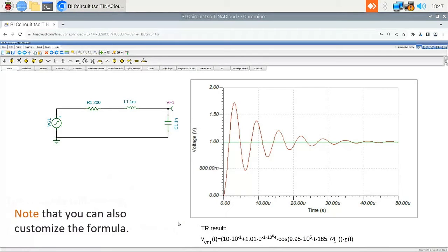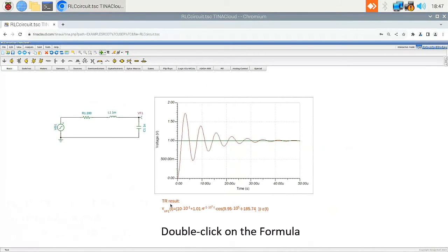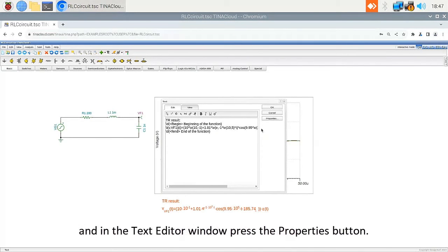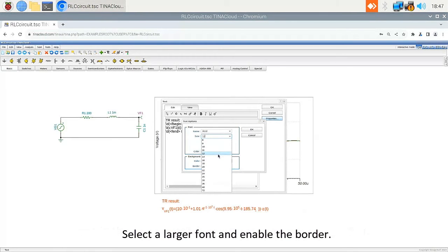Note that you can also customize the formula, for example, you can change the size of the font, or add a border to it. Double-click on the formula, and in the Text Editor window, press the Properties button. Select a larger font and enable the border.